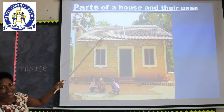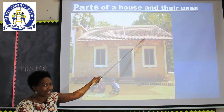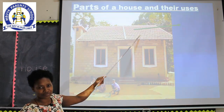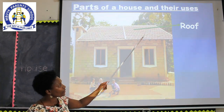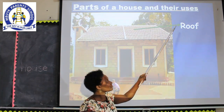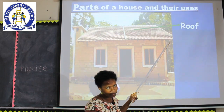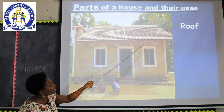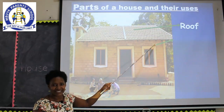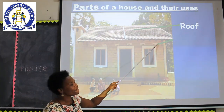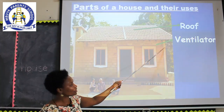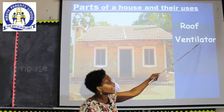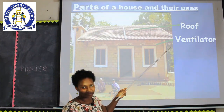Can you look at this part here? Who can identify this part? This part is the roof. Can you repeat after the teacher? Roof. Spell the word roof: R-O-O-F. We also have ventilators — there are very many on our house. This is the ventilator. Let us spell the word ventilator: V-E-N-T-I-L-A-T-O-R. If it is one, you say ventilator; if there are many, you say ventilators.